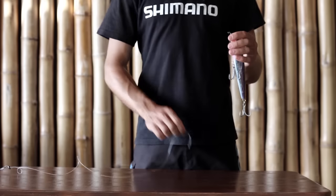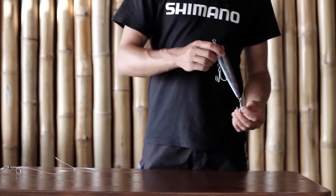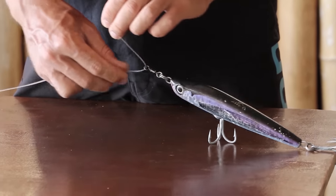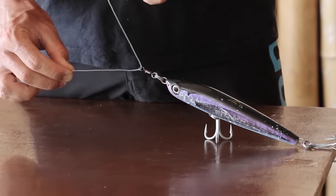When casting large surface lures to hard-fighting fish, the AG Chainknot is one of the most favored by sports fishermen. This is because of its incredible strength and shock absorbent quality.